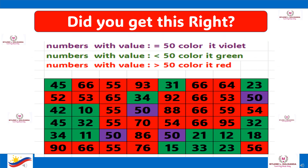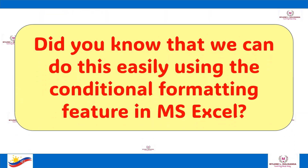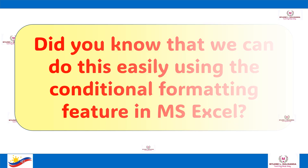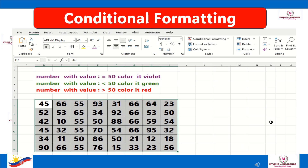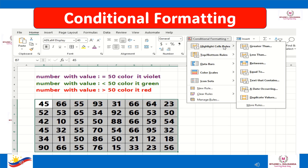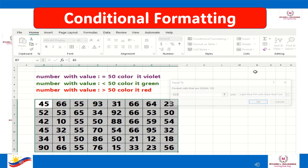Did you get this right? Did you know that we can do this easily using the conditional formatting feature in MS Excel? This is how to do it. First, highlight or select all numbers that you want to fill with colors, then click Home, then click Conditional Formatting, click Highlight Cell Rules, then click Equal To.